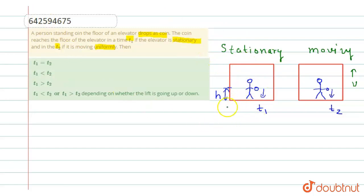Now if the elevator is stationary, then we can easily find the height which is equals to half g t1 square. Now t1 is equal to root 2h by g.